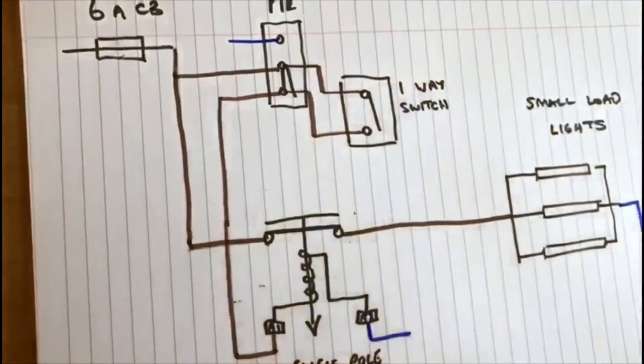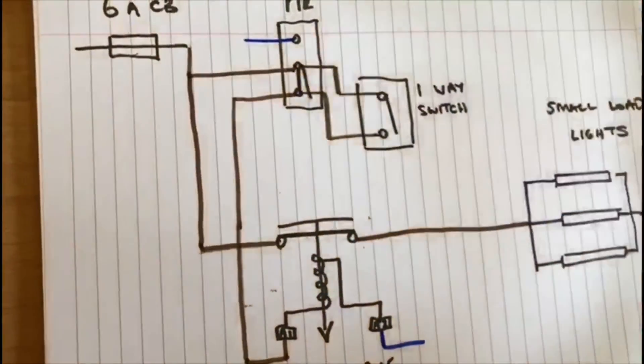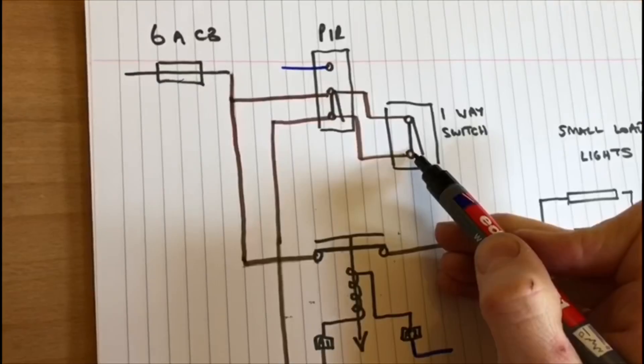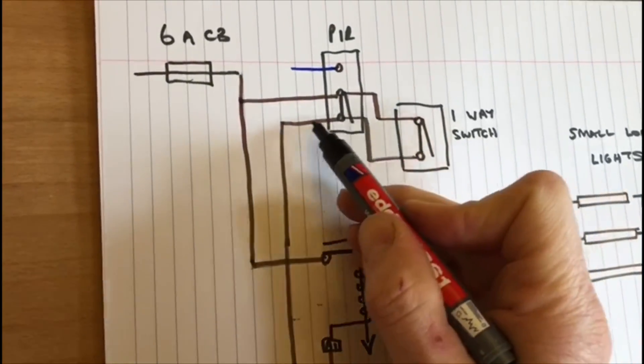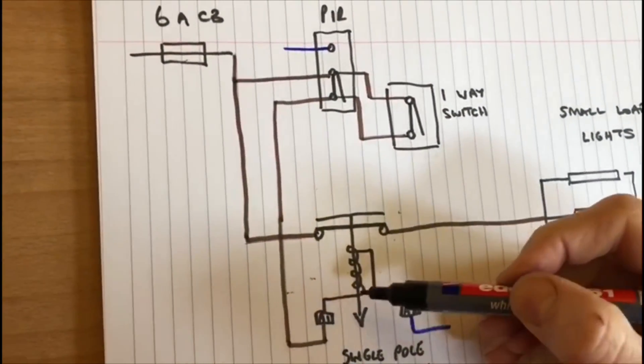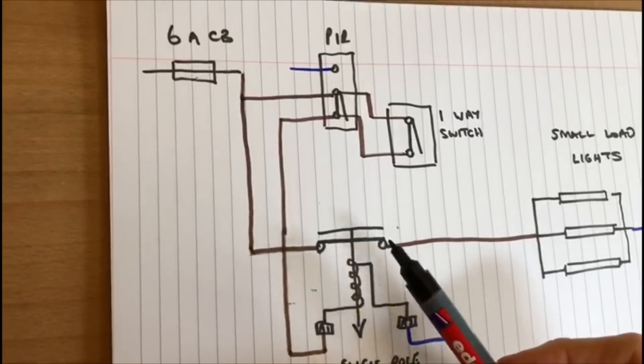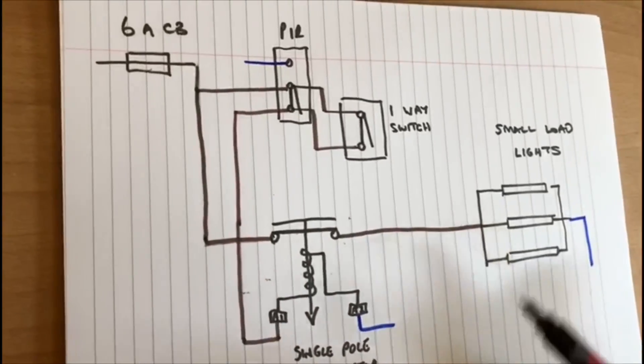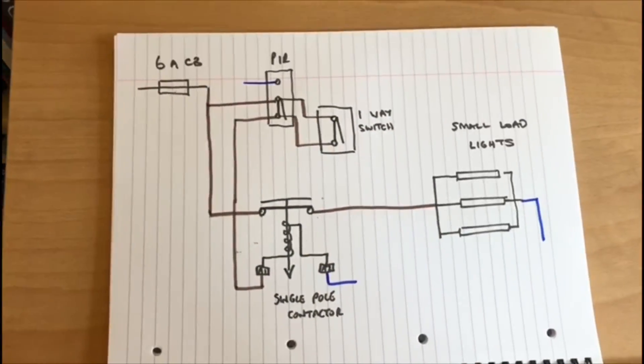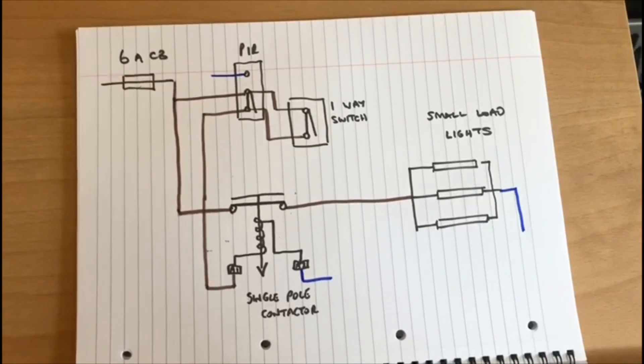So now if this switch I showed you previously, with this switch being closed—if this switch is now closed, the circuit then follows down through here, down to the coil, energizes the coil, pulls the contactor down, makes a connection here, and the lights come on. A PIR being operated with a contactor and an override switch.